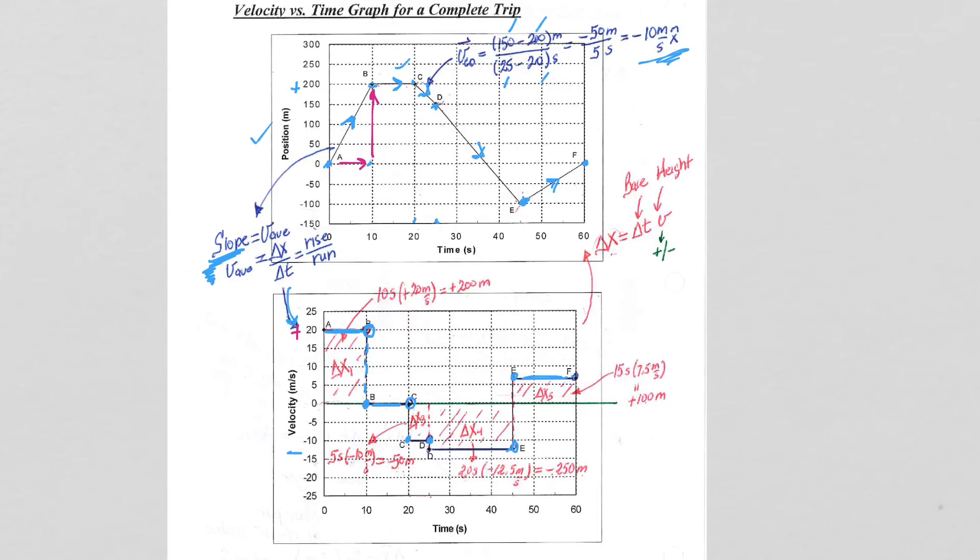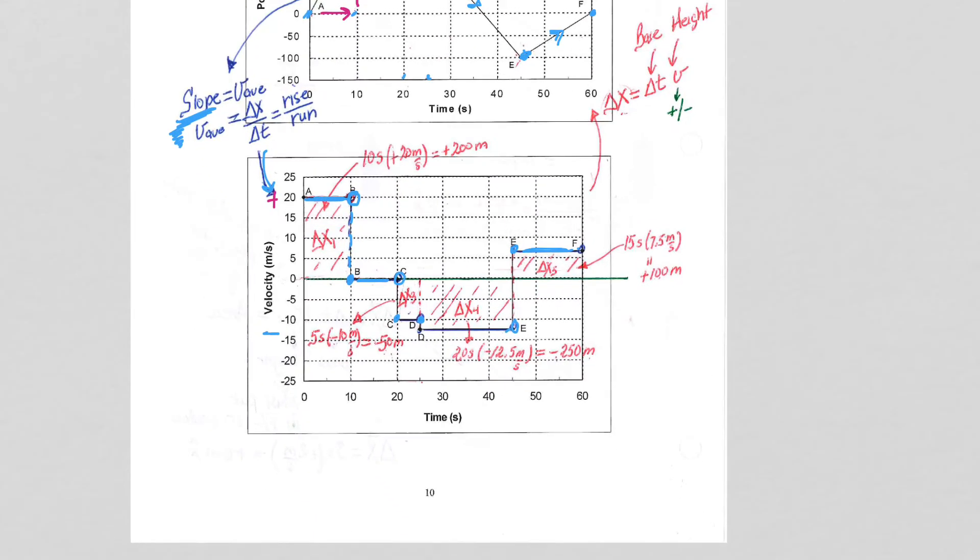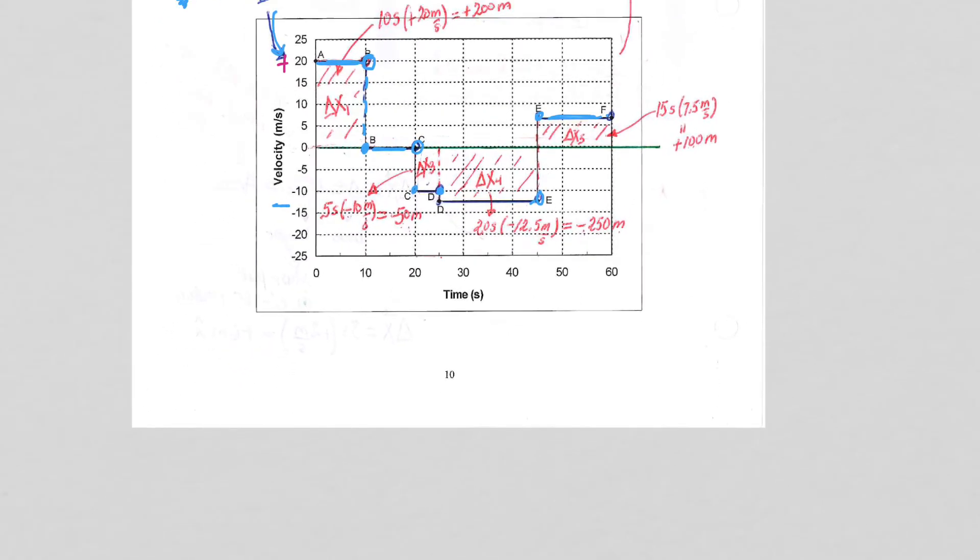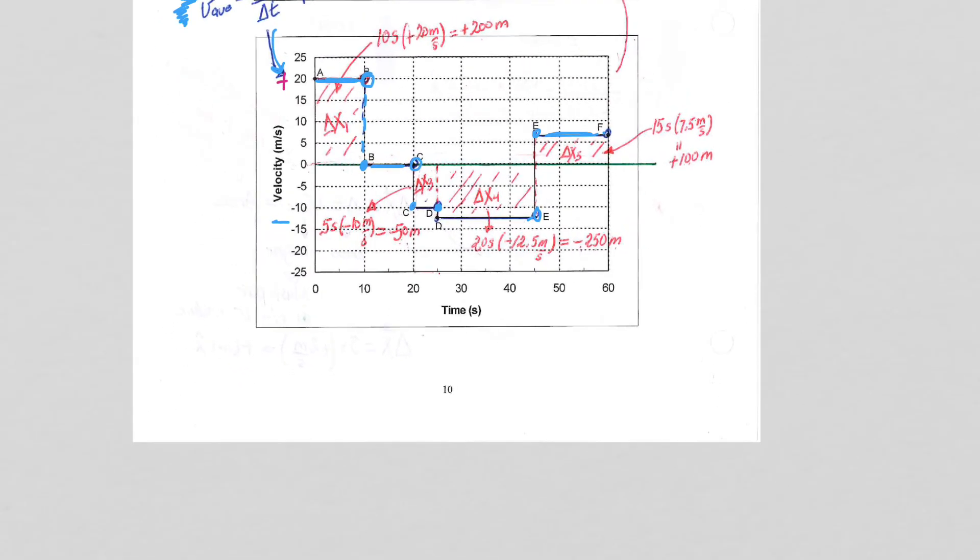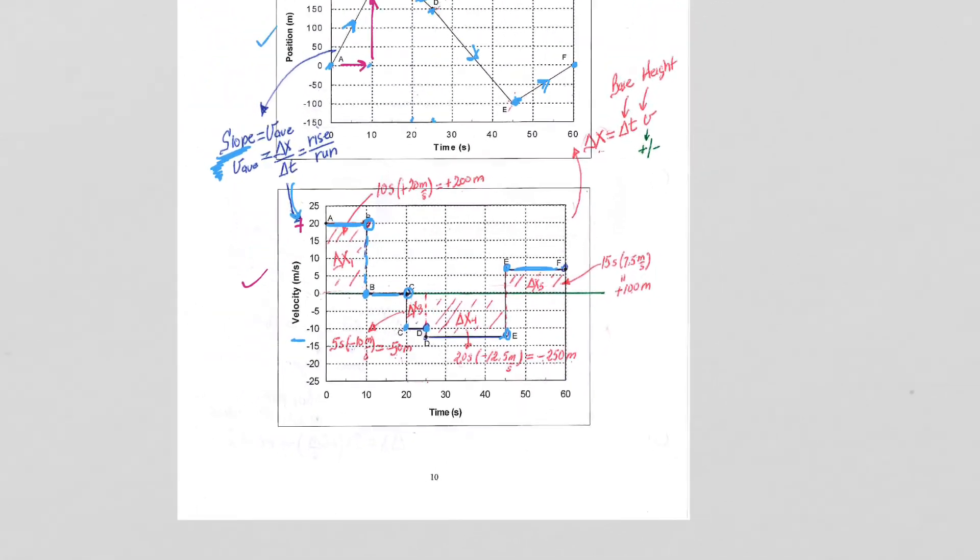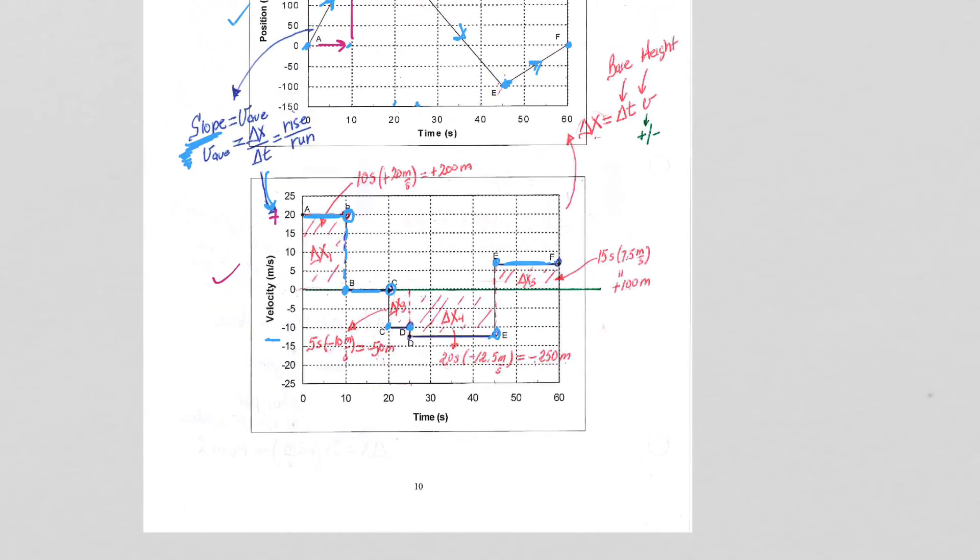Now, if we were given our velocity versus time graph, let's go back and get that position versus time graph out of there. If we were given the velocity versus time graph but not shown the position versus time graph, how would we go from our velocity versus time graph back to our position versus time graph? Well, that is going to be all about the area. To calculate the area, this first step I think is really important.